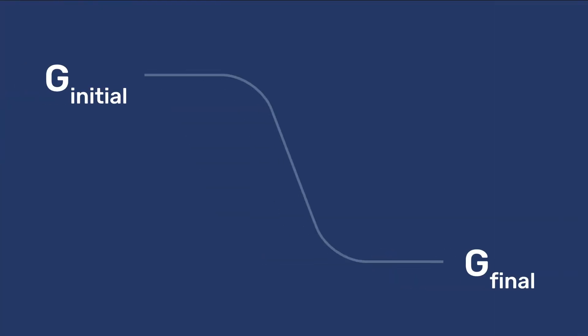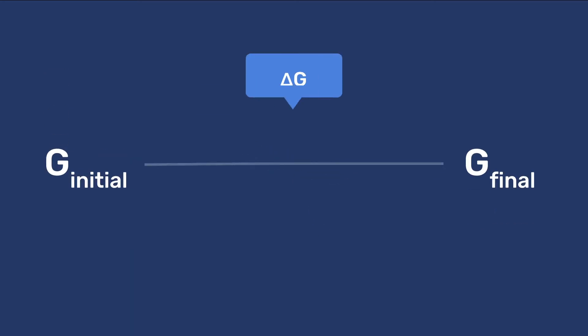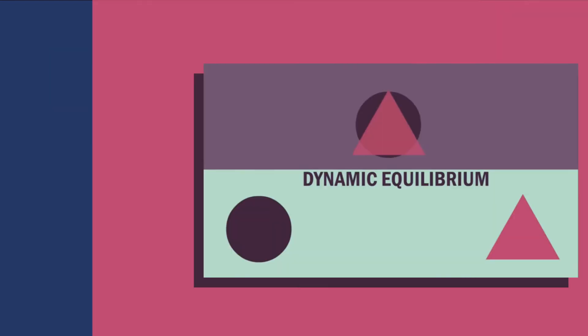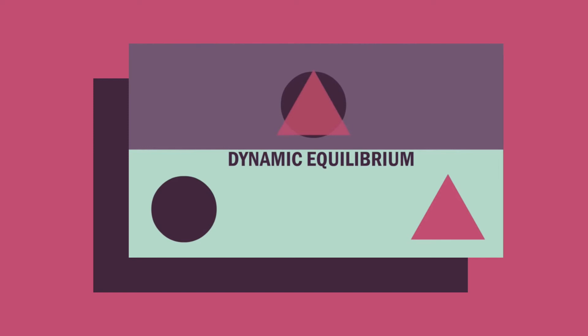If the initial and final free energies are equal, delta G is zero, and the system experiences a dynamic equilibrium. For more information on dynamic equilibrium, please check the corresponding videos.